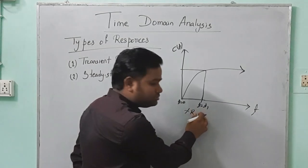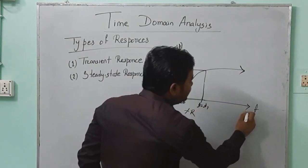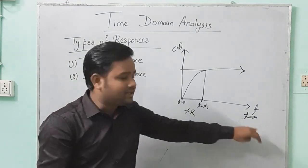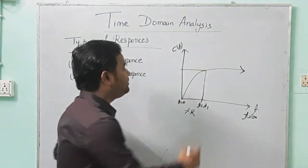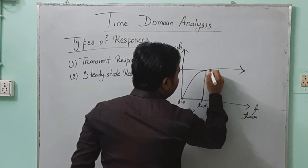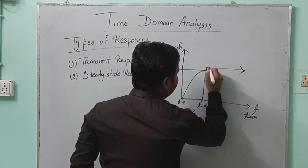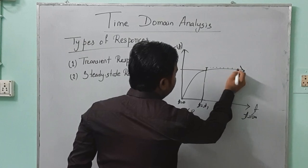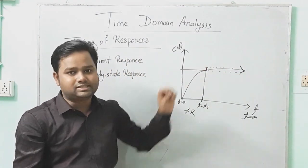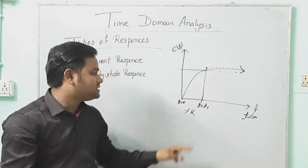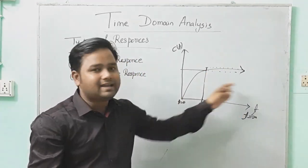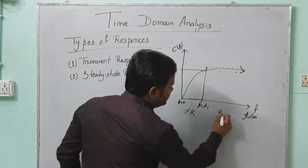After T1, if the time changes from T1 till T equal to infinity, the output change is very small — a small amount of change or no change takes place. That means if the time changes continuously but there is no change in the output signal, then this signal is known as steady state response.